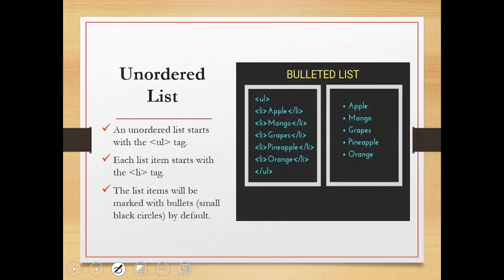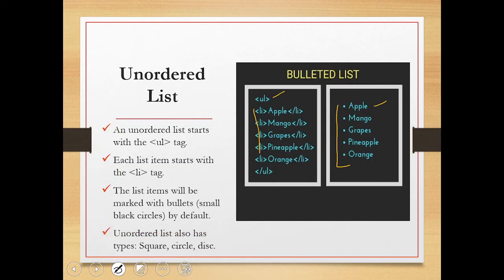An example of an unordered list: you create a list with ul followed by li items for apple, mango, grapes, pineapple, and orange, then close the unordered list. The output comes in the form of bullets — small black circles, just like in a word document. We can also give different shapes for the bullets. For the unordered list, the type options are square, circle, and disc.